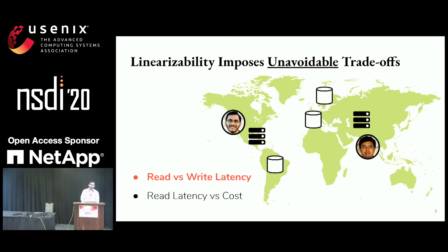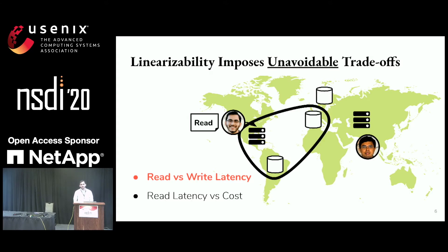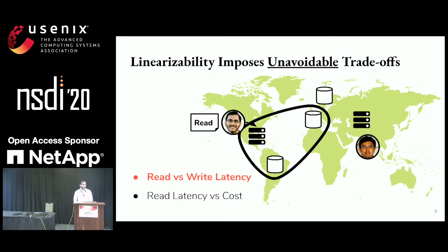I'm going to discuss the trade-off between read and write latency, and also between read latency and cost. When I execute a read, I'm going to contact a minimum of two data sites to ensure that writes are available even during failures. The subset of data sites I'm contacting I'm going to refer to as a quorum — this is my read quorum.